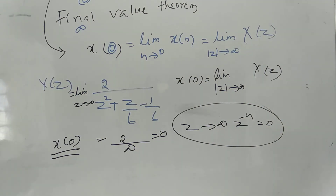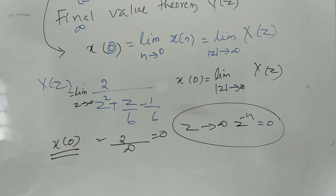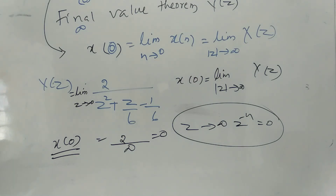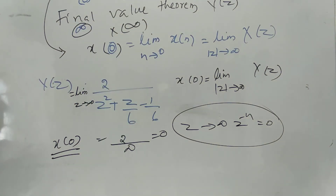According to the Z transform property, as Z tends to infinity, Z raised to minus N will tend to zero. So all terms except the first one approach zero — that is the essence of the Initial Value Theorem. For the Final Value Theorem, the poles of X of Z must be inside the unit circle, and the final value X of infinity is determined accordingly.